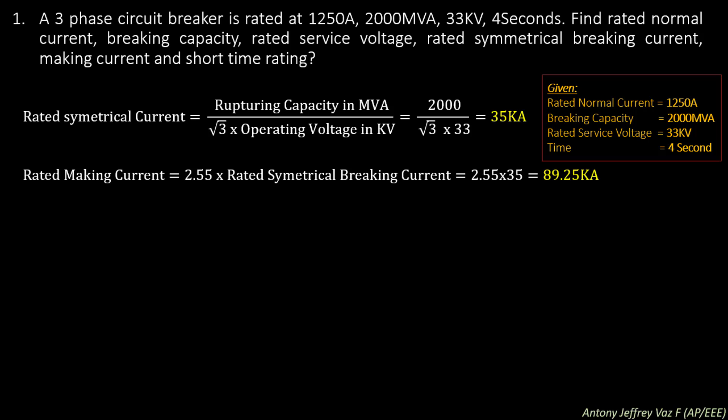Rated making current = 2.55 into rated symmetrical braking current. We have already calculated the rated symmetrical current which is 35 kA. So 2.55 into 35 kA will give 89.25 kA. The short time rating will be equal to 35 kA for 4 seconds.